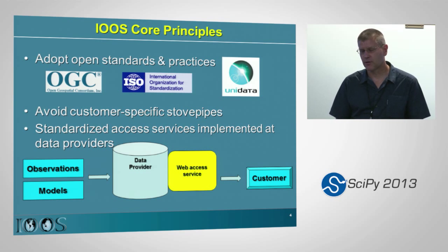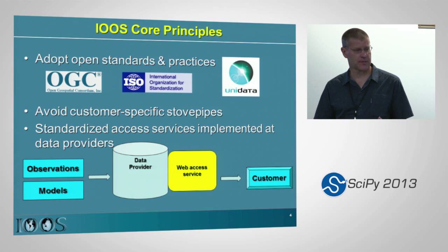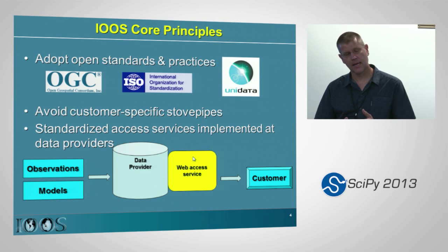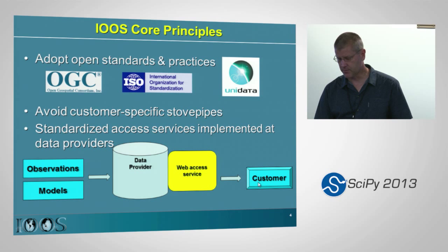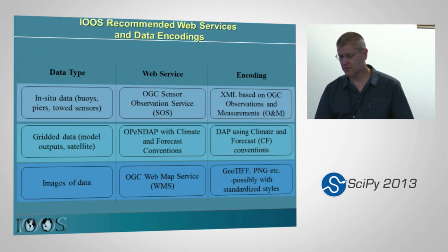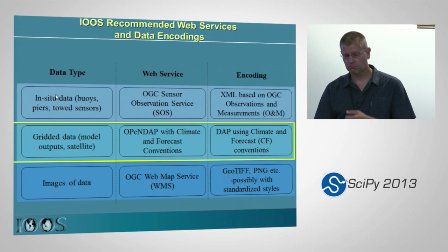IOOS has an architecture based on web services. They say: if you have observations or models, you're a data provider — you provide a web service. They specify which approved services are to be used to go to the customer, or more likely a client built for the customer. They didn't invent their own services; they used services that were around, either OGC services — so in the case of in-situ data, the OGC SOS, the Sensor Observation Service.